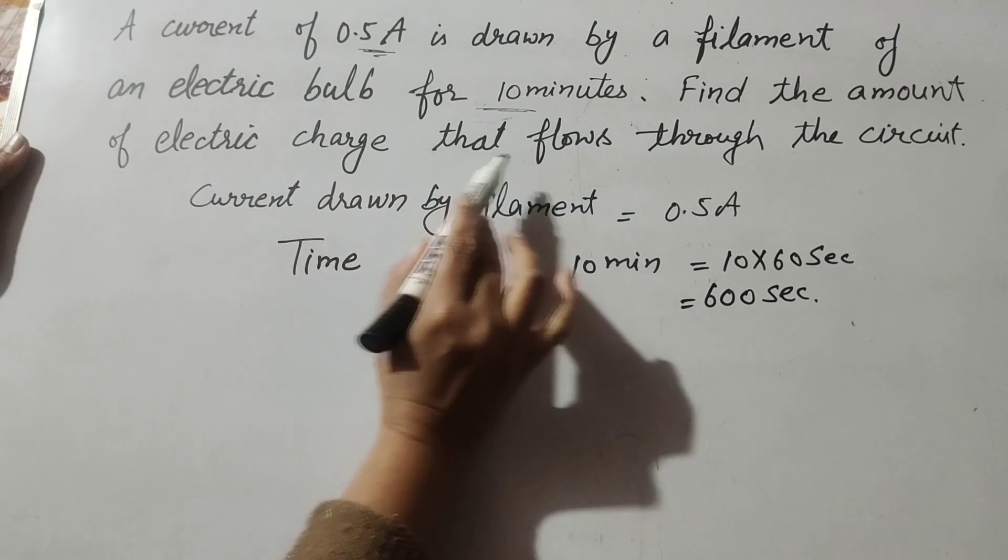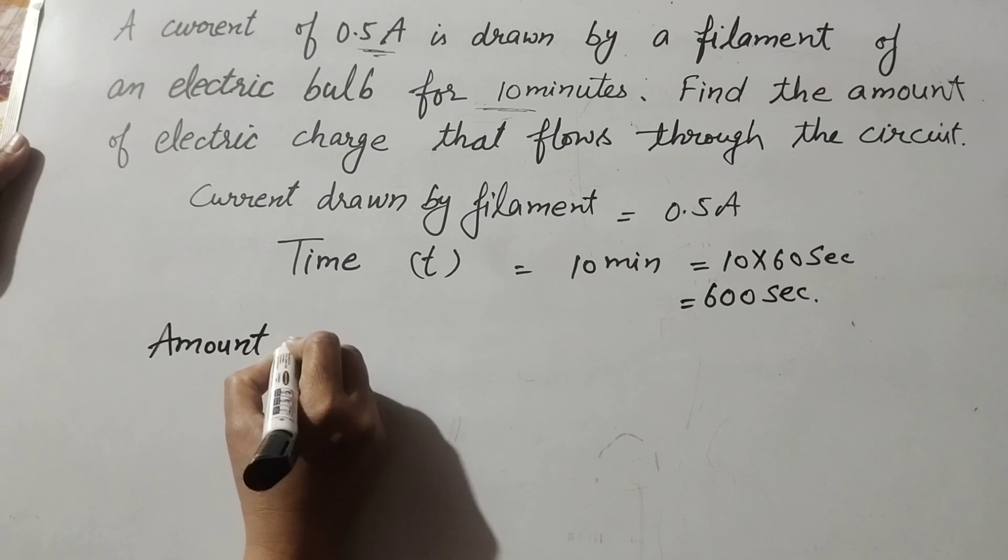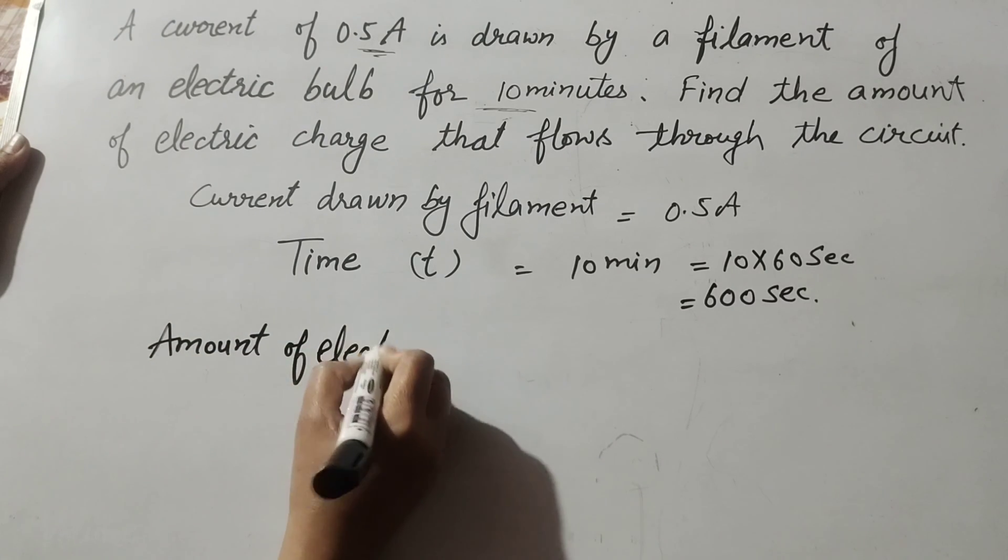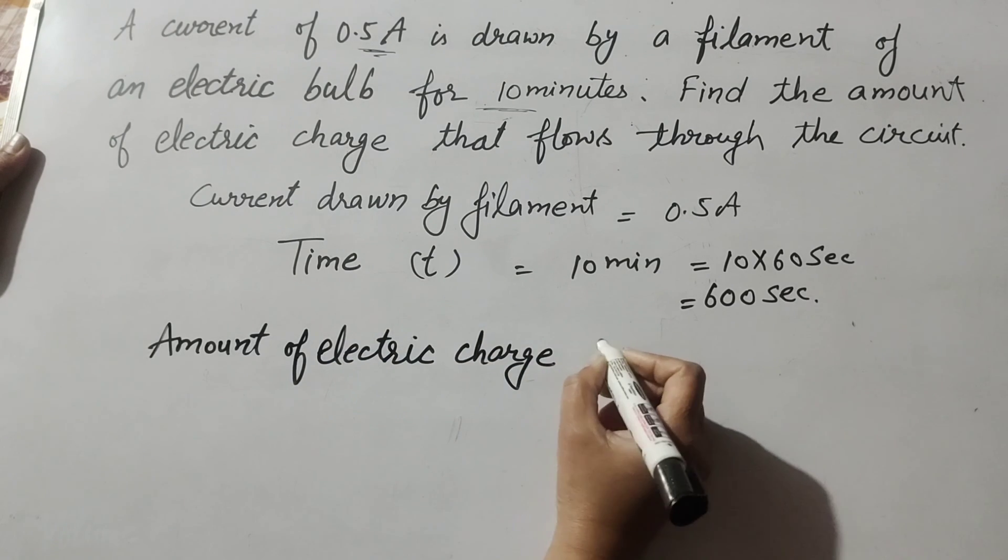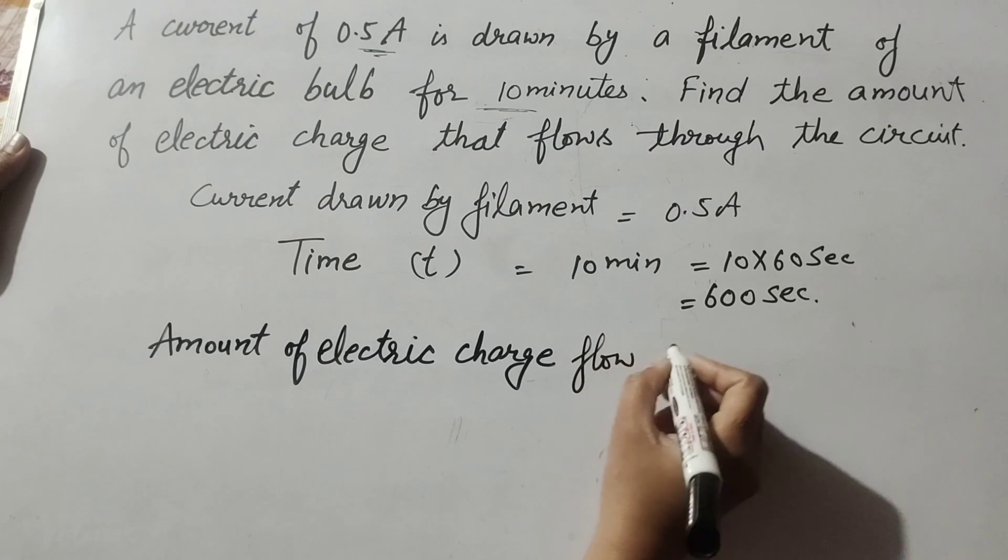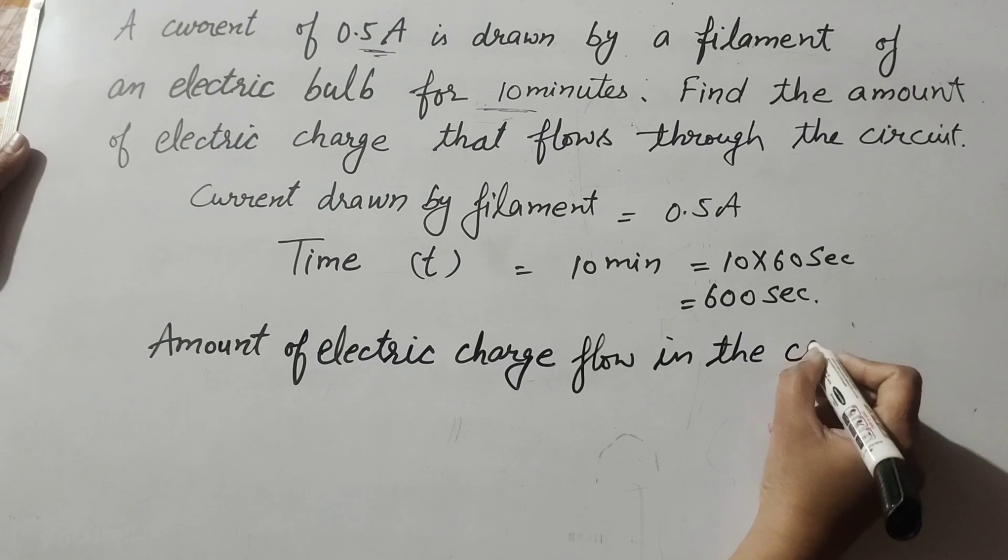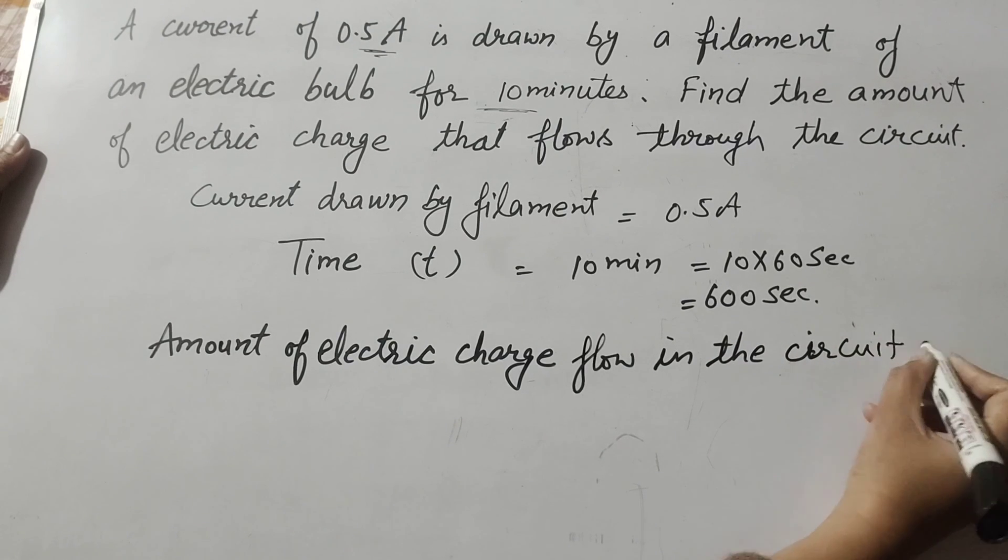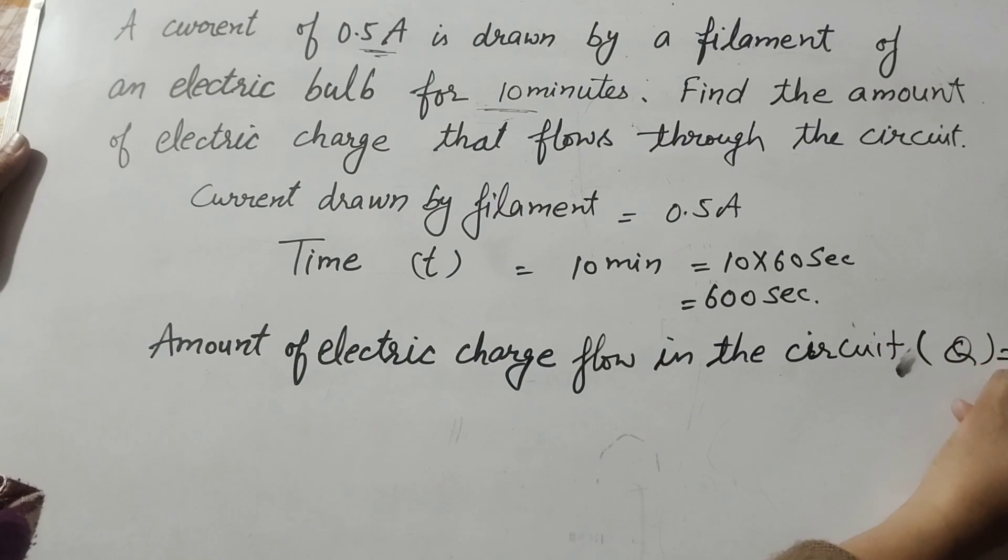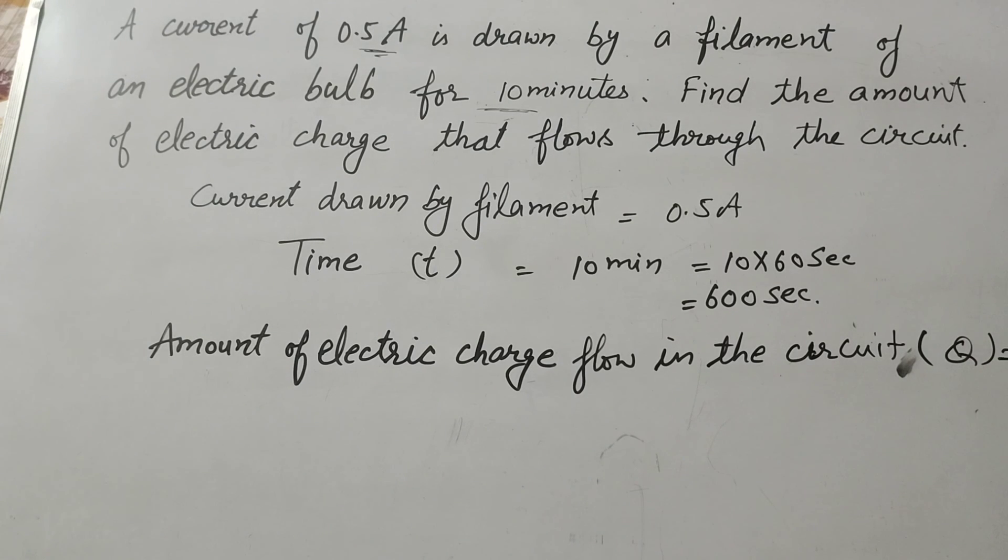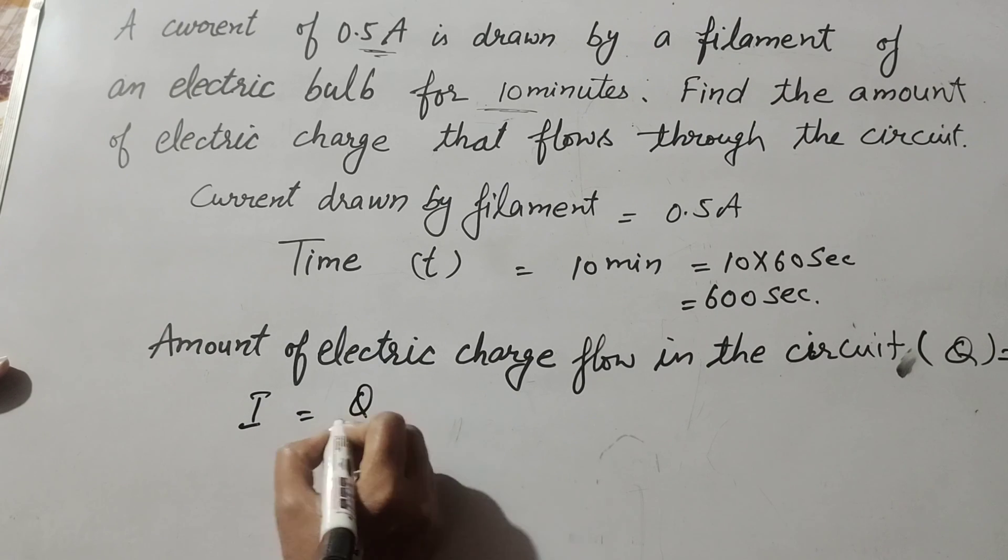Find the amount of electric charge that flows through the circuit. So we find amount of electric charge flow in the circuit, that is Q that we find. Electric charge is Q that we find. So we know the formula to find current: I is equal to Q over T.